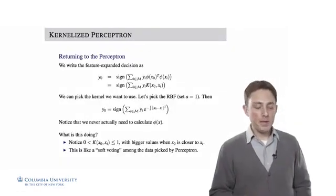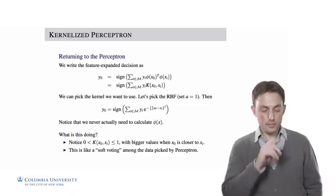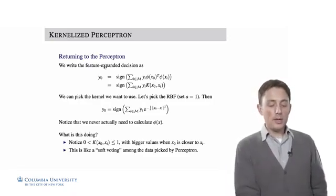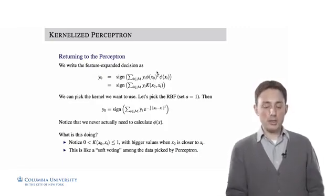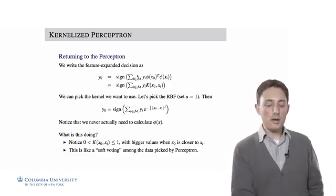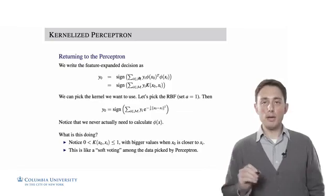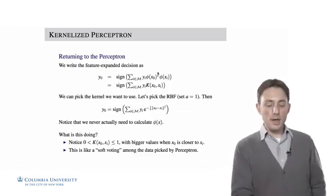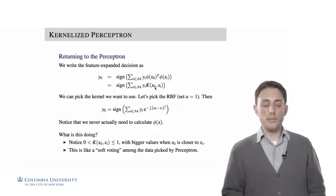Let's return to the perceptron and think about how kernels relate to that specific model. We saw that we could write the feature-expanded decision in this way. For a new x-naught, we project it into its higher dimensional space using the function phi, and we project each of the data points in the set M into that higher dimensional space. Instead of taking dot products between these points, we replace them with the kernel function between these two points.